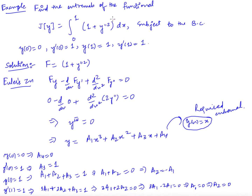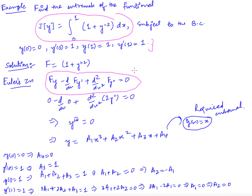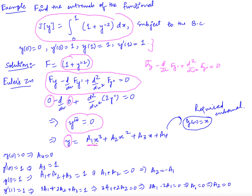Let us do one example: find the extremal of the functional ∫(1 + (y'')²) dx subject to the given boundary conditions. Here f = 1 + (y'')², so the Euler equation is f_y − d/dx(f_{y'}) + d²/dx²(f_{y''}) = 0. Since y does not appear explicitly, f_y = 0; f_{y'} = 0 as well; and f_{y''} = 2y''. So we get d²/dx²(2y'') = 0, which means y^(4) = 0.